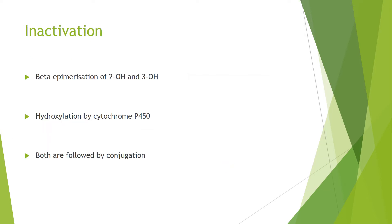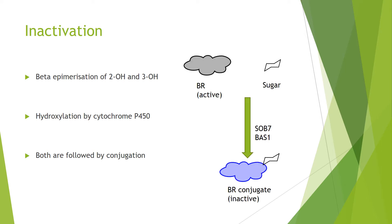In inactivation, there is a change in hydroxyl status followed by conjugation. Specifically, carbons 2 and 3 have hydroxyl groups, which can be epimerized, changing their availability for conjugation. Or, we can have addition of hydroxyl groups by cytochrome P450s such as SOB7 and BAS1. Both of these steps are followed by conjugation — I've used a sugar as an example of a conjugate here, but you can also have a fatty acyl chain.